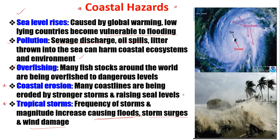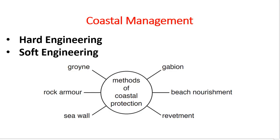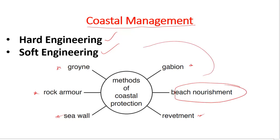Storms can also damage lives and properties. Now, for coastal management, there are two ways to manage the coast: hard engineering and soft engineering. Hard engineering methods include groynes, rock armor, sea walls, gabions, and revetment, while beach nourishment is a soft engineering method. We're going to look at each of these methods and how they help to manage the coastline.